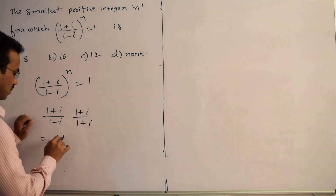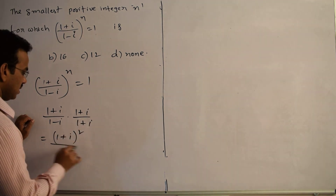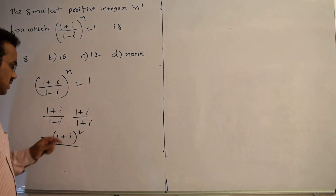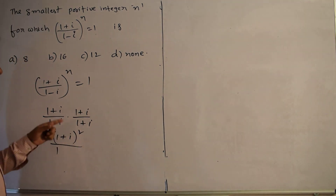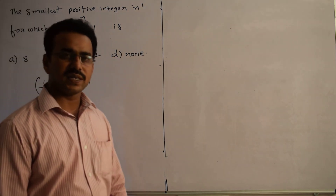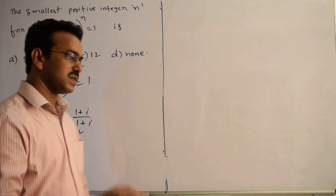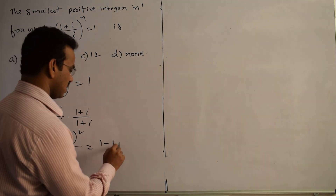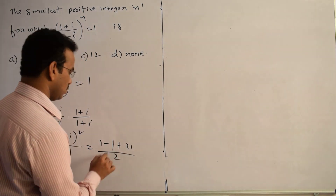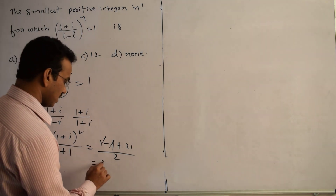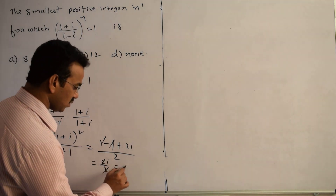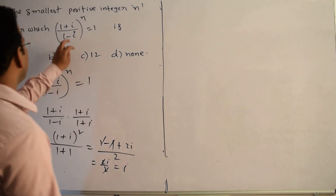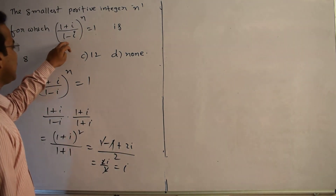So we get (1 plus i) whole square in the numerator, and in the denominator we apply the identity a squared minus b squared: 1 minus i squared. Since i squared equals minus 1, that gives 1 minus (minus 1) equals 2. Expanding the numerator: 1 plus i squared plus 2i equals 1 minus 1 plus 2i. The 1 and minus 1 cancel, leaving 2i divided by 2, which equals i.